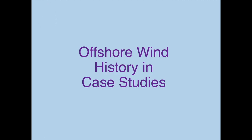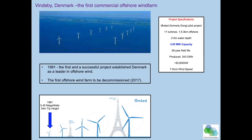Looking at the history of offshore wind through three case studies: the first is the very first offshore commercial wind farm. In 1991, the Vindaby wind farm with 11 turbines started commercial production — each turbine was about 0.45 megawatts, small relative to the Statue of Liberty. It was an Orsted project with ultimately around 5 megawatts of total capacity. It was very successful, but was actually decommissioned in 2017 as the first offshore wind farm to be decommissioned, leaving many learnings for offshore operations.